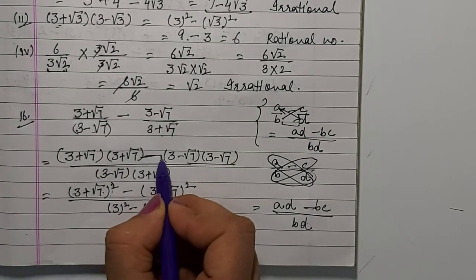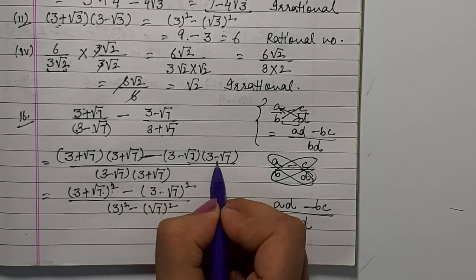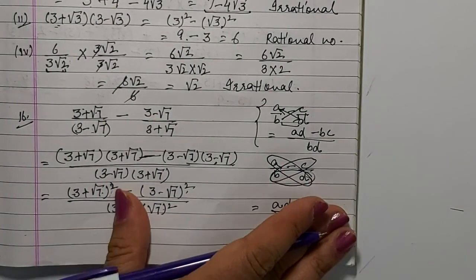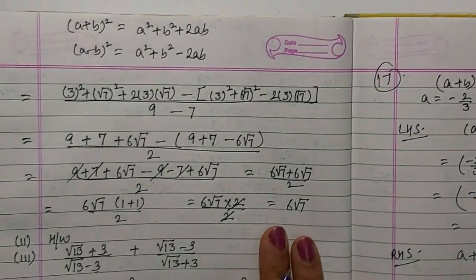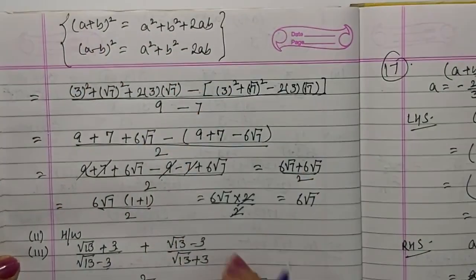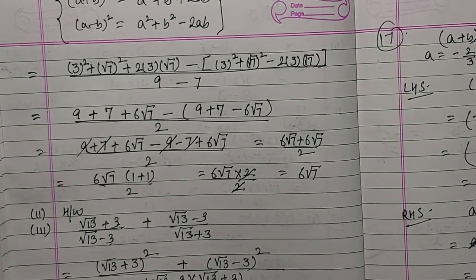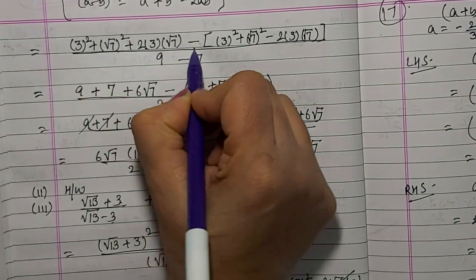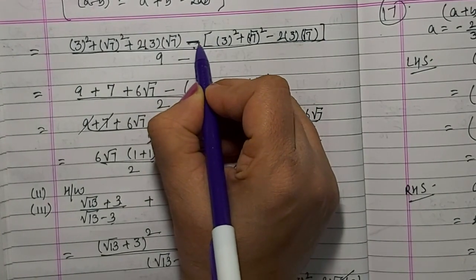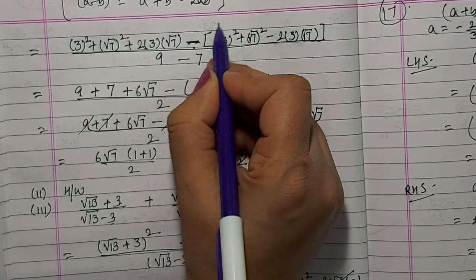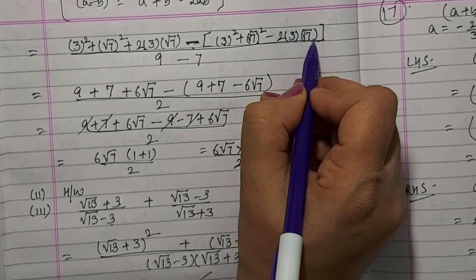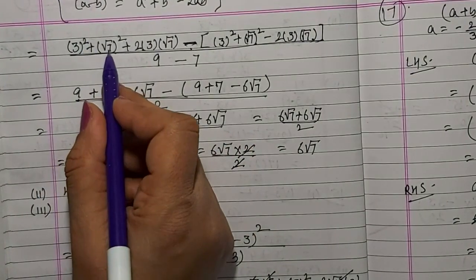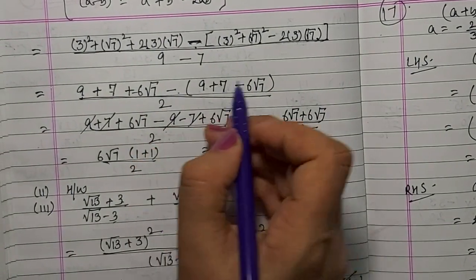Using the same concept: 3 plus root 7 times 3 plus root 7 gives 3 plus root 7 whole square in the numerator, minus 3 minus root 7 whole square. In the denominator: a plus b times a minus b equals a squared minus b squared. Write both identities. Open the expressions: a squared plus b squared plus 2ab minus bracket a squared plus b squared minus 2ab. The negative sign before the bracket reverses signs inside.